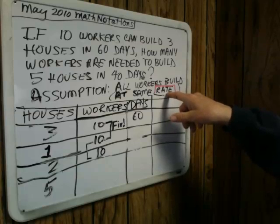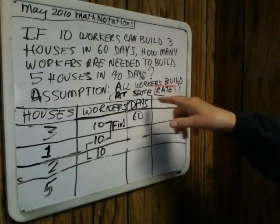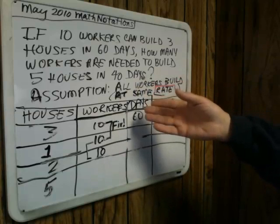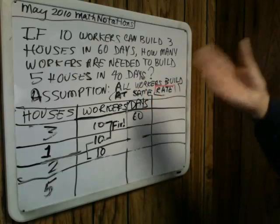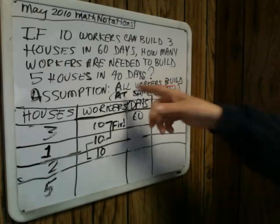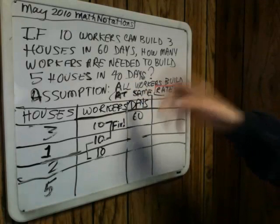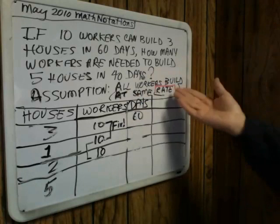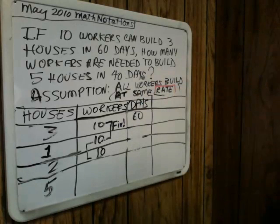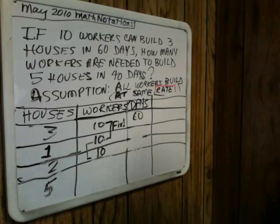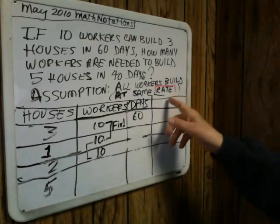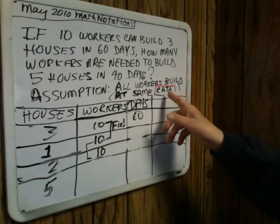I also mentioned here there's an assumption — you could ask students to fill that in. You could prompt them: what assumption are we making? If there's no response, then you could write, 'all workers are building at...' and they should be able to complete it. At least one person could say 'same rate.' And rate here is at the heart of this whole issue.